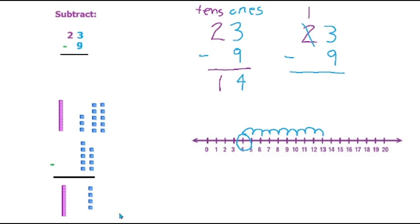And we carry the 1 that we just borrowed to here. So we have 13 minus 9. And we know from the number line, 13 minus 9 is 4. And then we're left with the 1 in the tens. So 23 minus 9 equals 14.